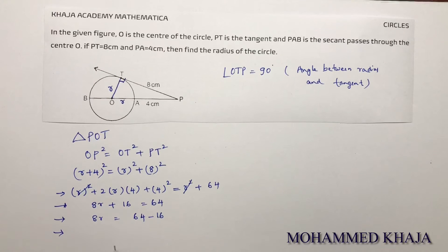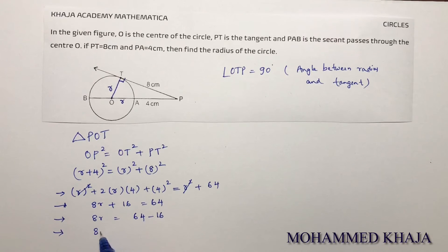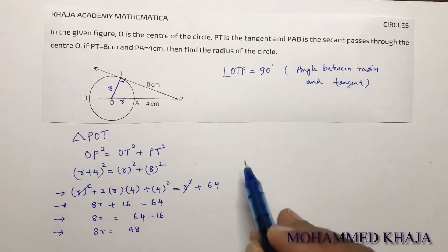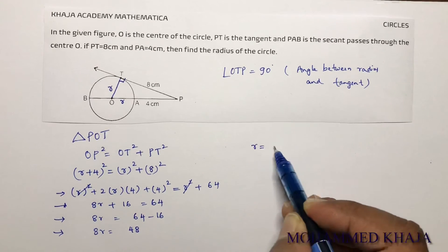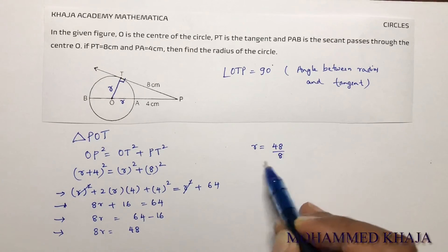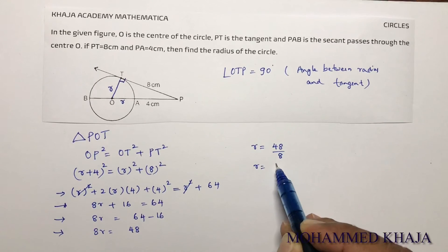So 64 minus 16 is 48, meaning 8R equals 48. Therefore R equals 48 divided by 8, R equals 6.